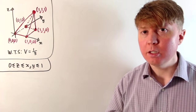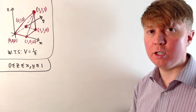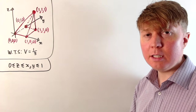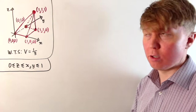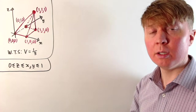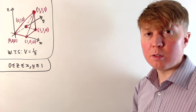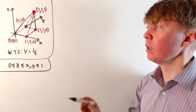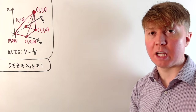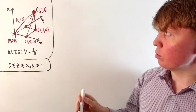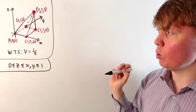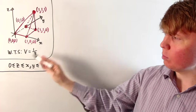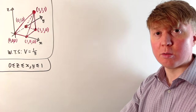Now we're ready to prove that this volume is indeed a third using a probability argument. The idea is very simple: we pick a point at random from the unit cube, and then the probability that this point lies within our pyramid shape corresponds to the volume of that shape, since the volume of the unit cube is just 1. So we want to show that the probability of picking a point in this region is going to be a third.